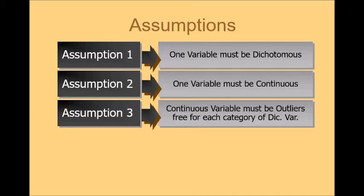The third assumption is continuous variable must be outliers free for each category of dichotomous variable. So understand that your data should be outliers free. There should be no outliers. You have to test the data for outliers. I will tell you later on how you will test for it.